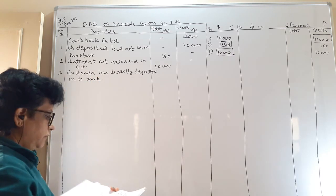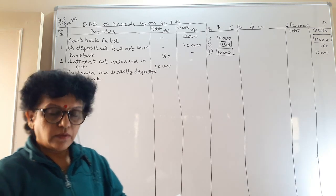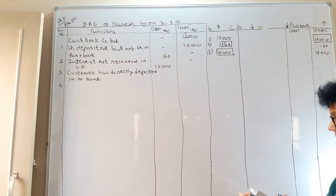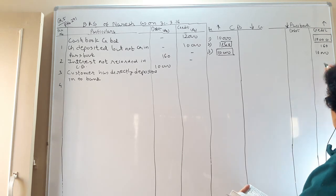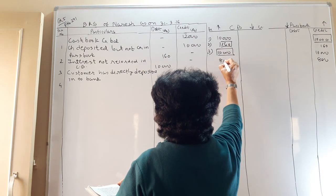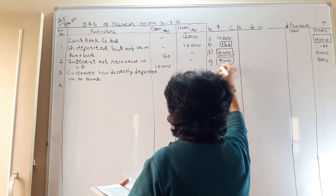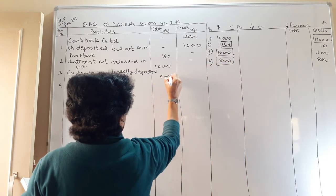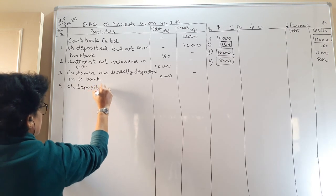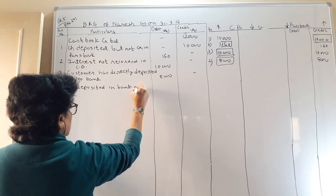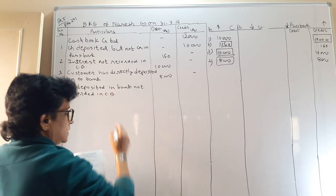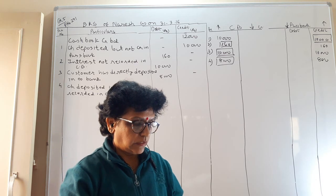Transaction 4: a check deposited with the bank but not recorded in the cash book. When you deposited the check, the bank already credited 8,000. What we have not done is record it in our cash book. So we record it now: debit 8,000. Entry: check deposited in bank, not recorded in cash book — debit rupees 8,000.